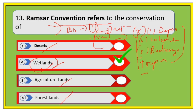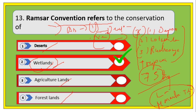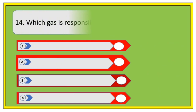The total number of Ramsar sites in India is 75. As an additional question: what is the largest tea garden? The answer is Monabarie Tea Estate — this is just an additional fact.